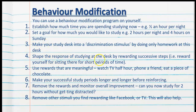Shape the response of studying at the desk by rewarding successive steps. Reward yourself for sitting there for short periods of time. Use rewards that are meaningful — for example, watching TV for half an hour, calling a friend, or eating a piece of chocolate. Make your successful study periods longer and longer before reinforcing. If the goal is two hours of homework per night, you might reinforce yourself with chocolate after every half hour of study, then extend that to after every hour, and then one reward after the full two hours are completed.